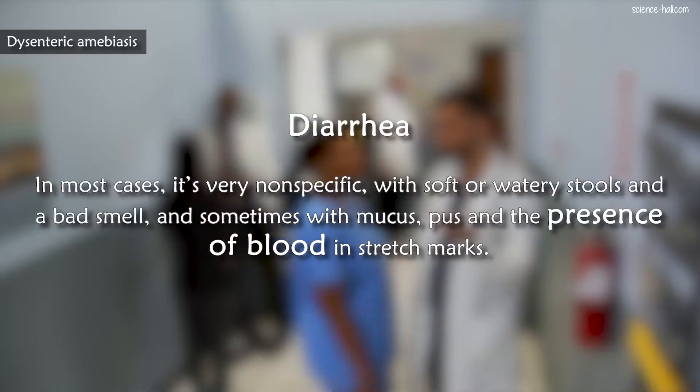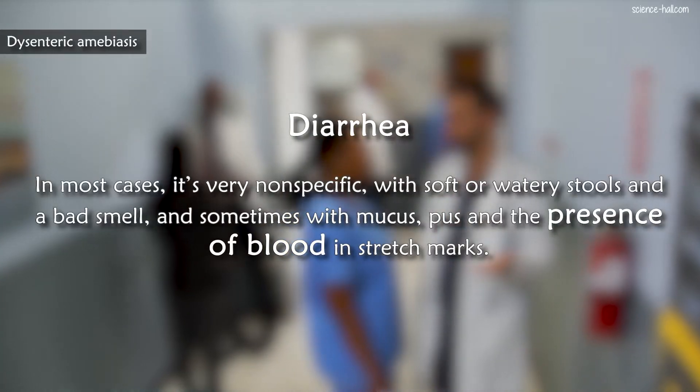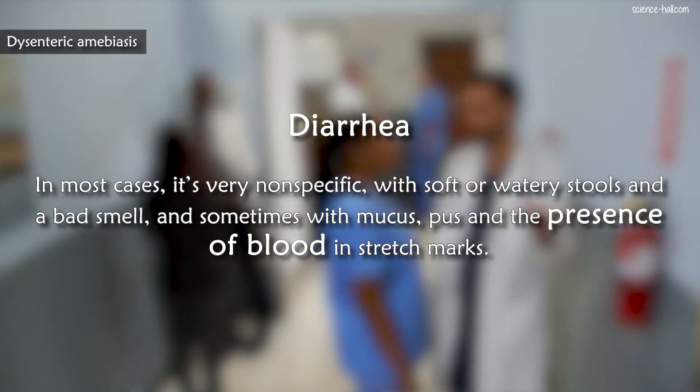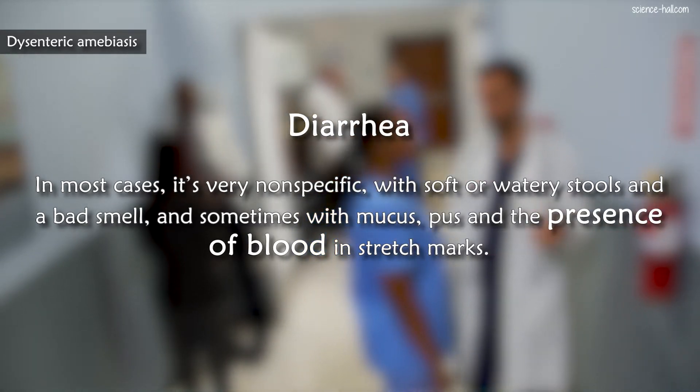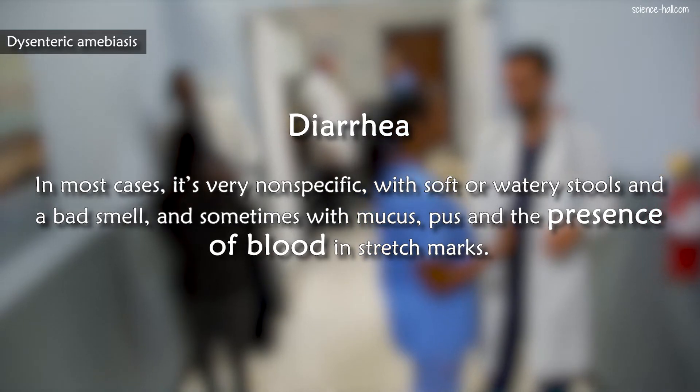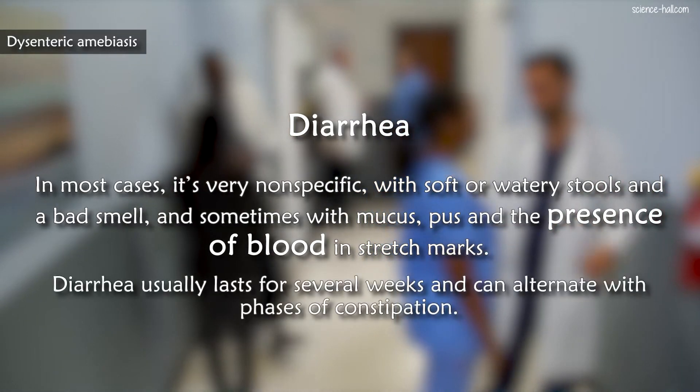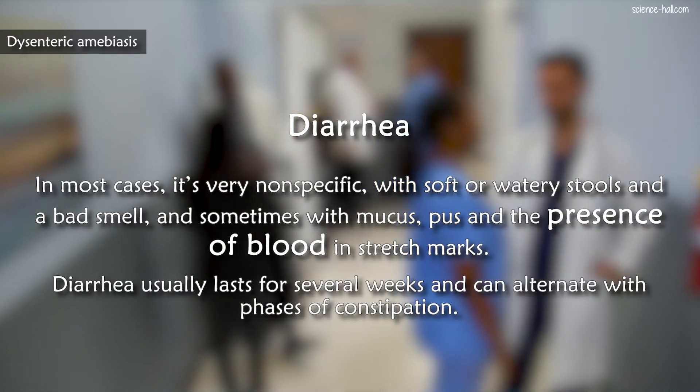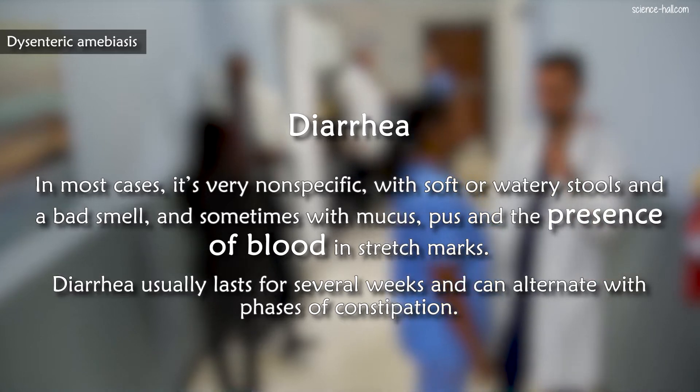But once the large intestine is extensively invaded, the symptoms become more intense and the disease enters a state period. In this phase, diarrhea is the most frequent and outstanding symptom. In most cases it's nonspecific, with soft or watery stools and a bad smell, sometimes with mucus and the presence of blood. Diarrhea usually lasts for several weeks and can alternate with phases of constipation.